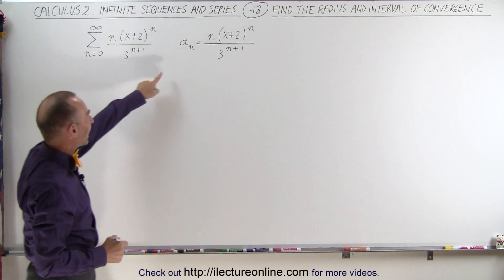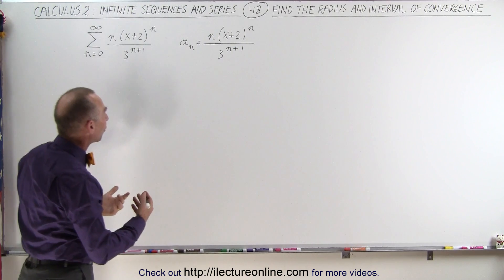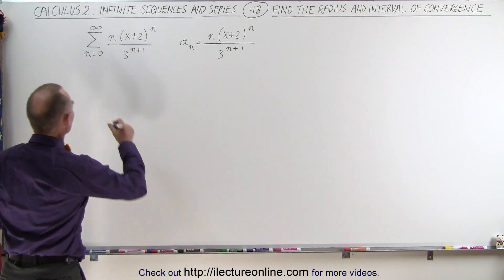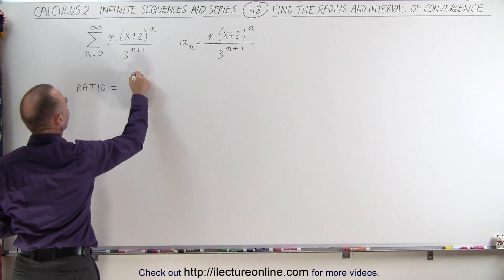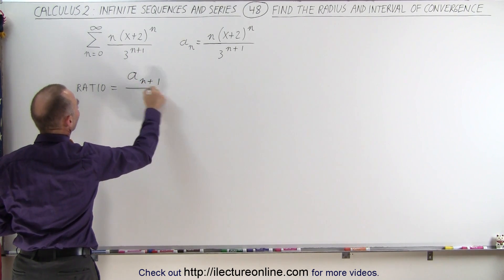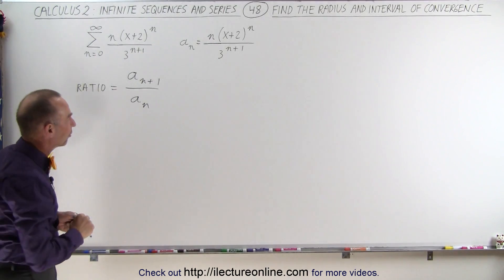Again, here we have the nth term of this infinite series, so let's find the ratio of the n+1 term divided by the nth term. So the ratio is equal to a sub n+1 divided by a sub n, simply the ratio of two consecutive terms in the series.